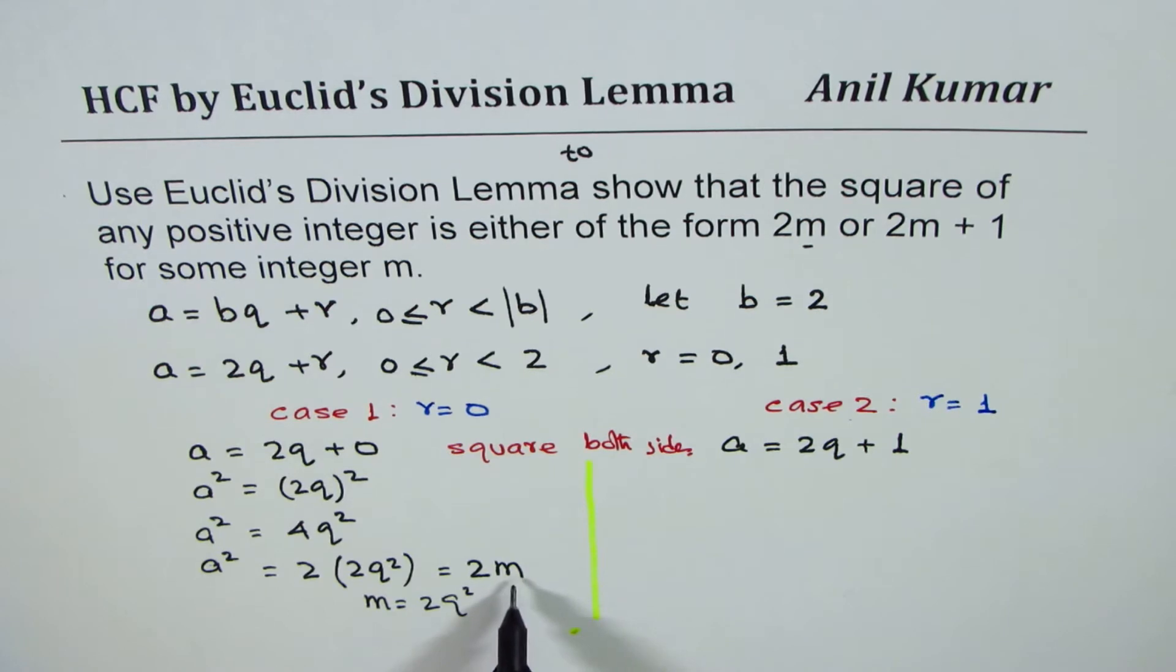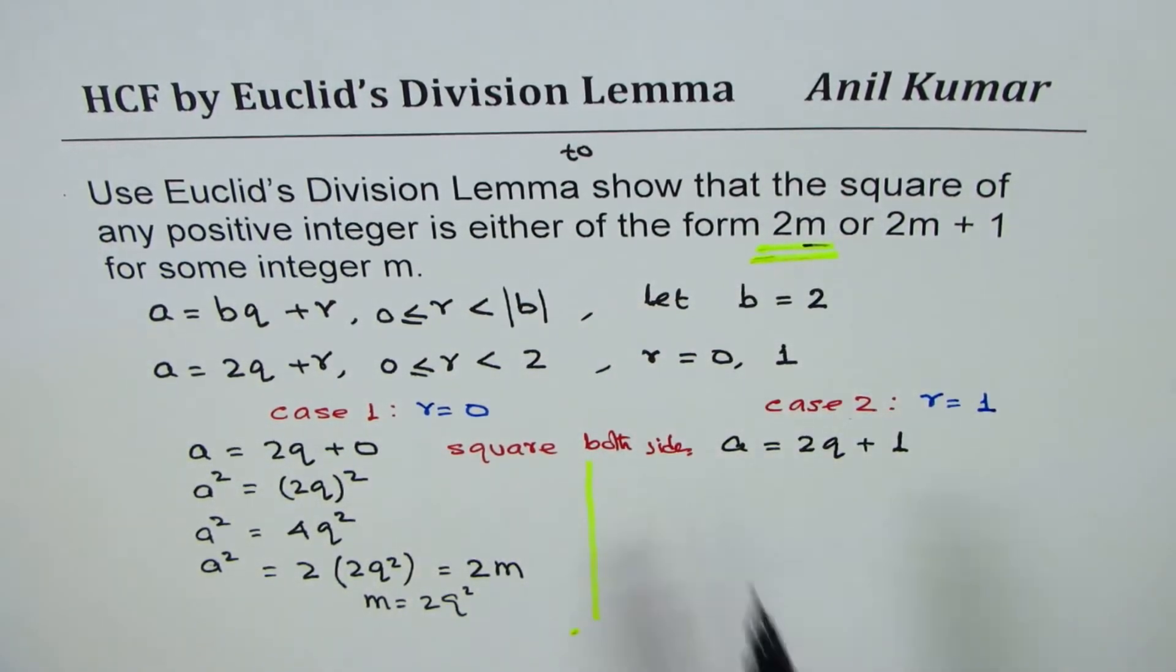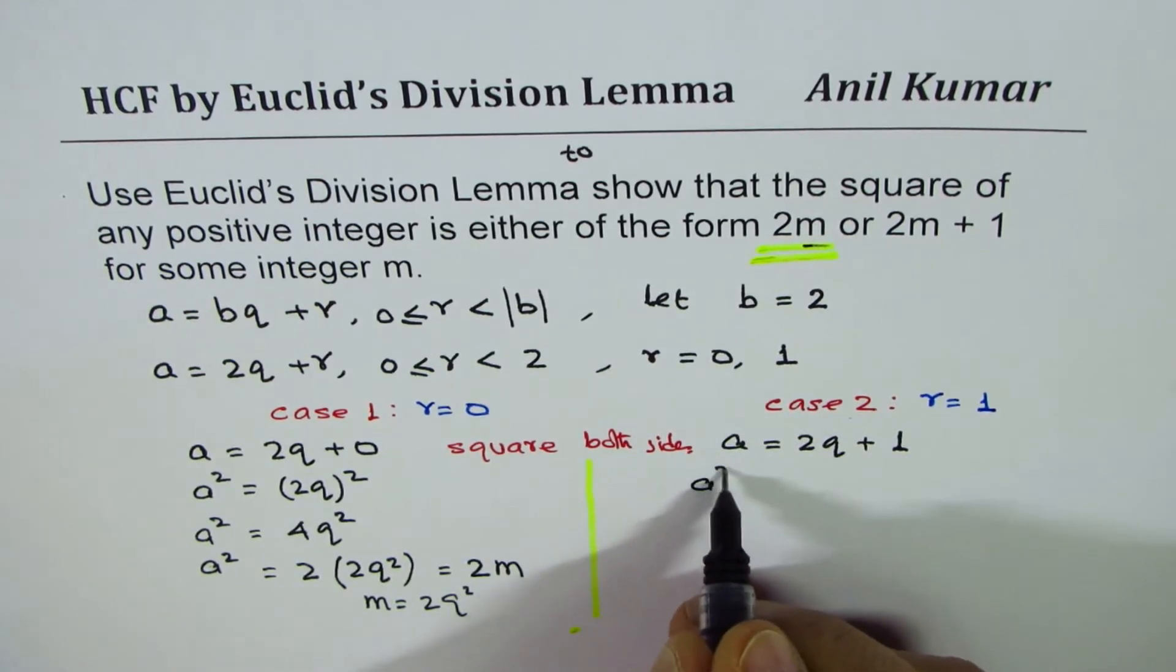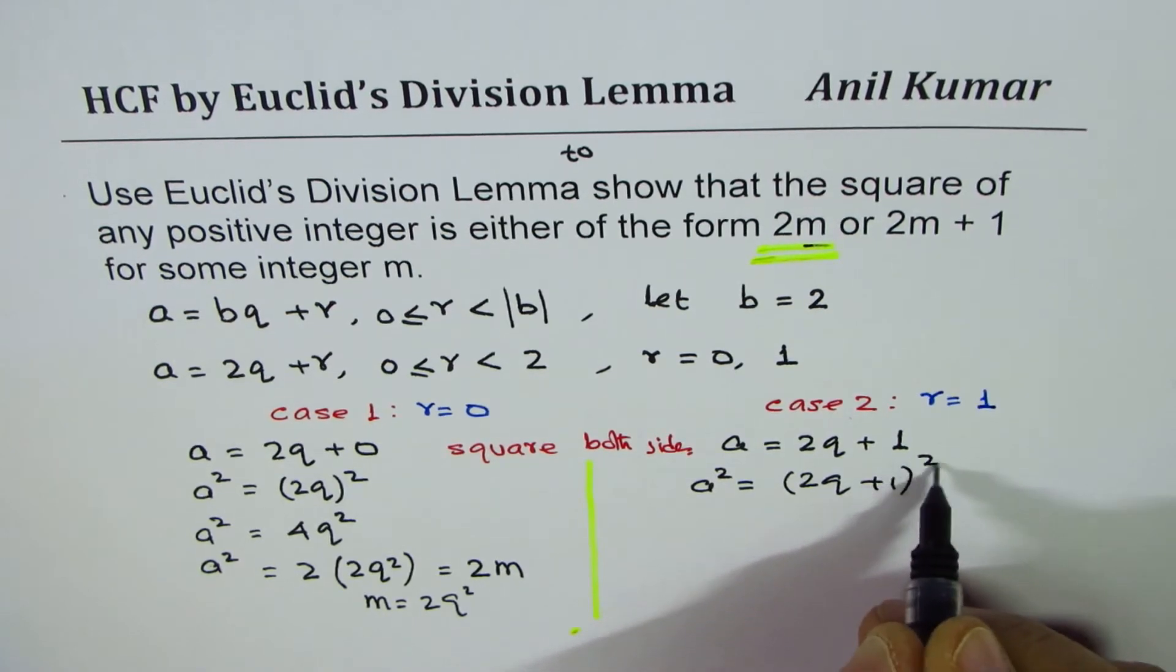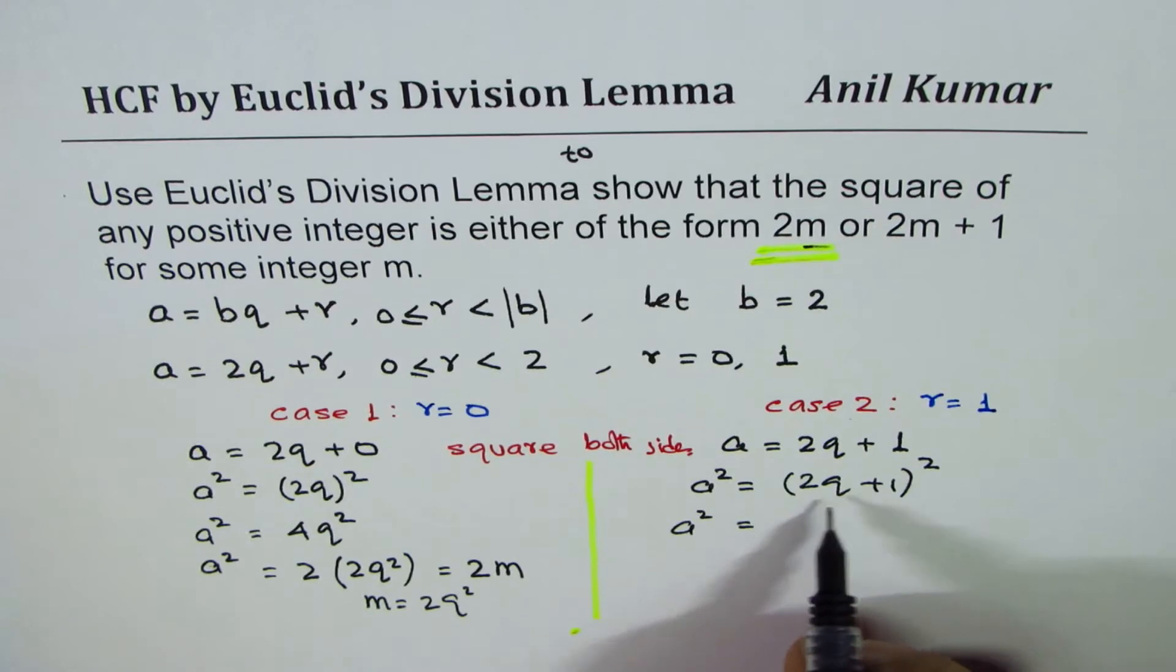Let's square both sides. When you square both sides, you get a² = (2q + 1)². We'll apply the formula (a + b)². Let me write down the formula here.